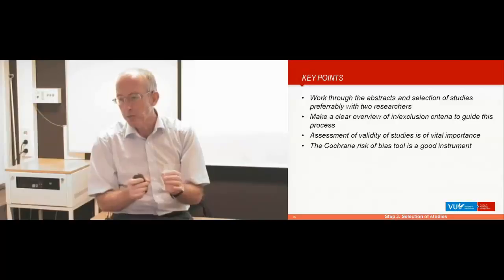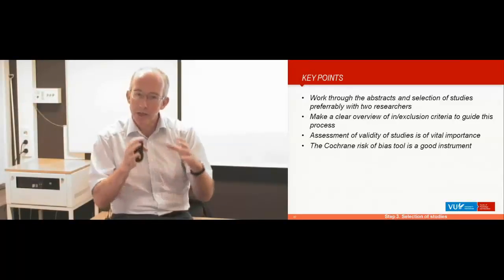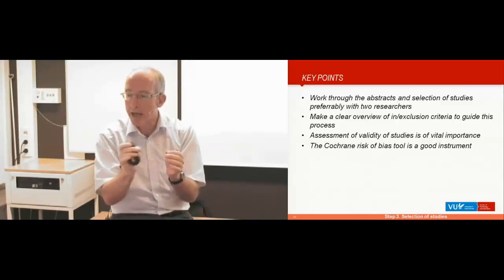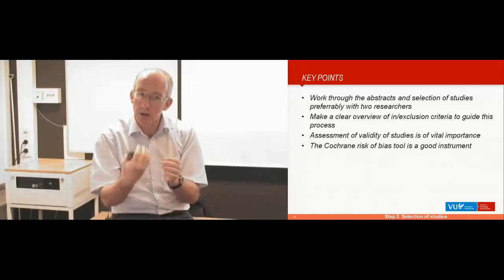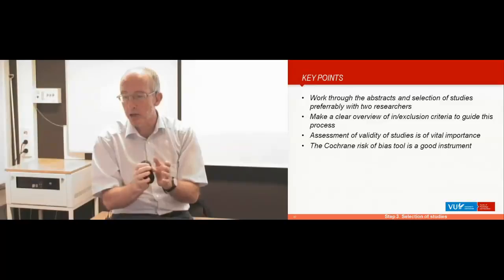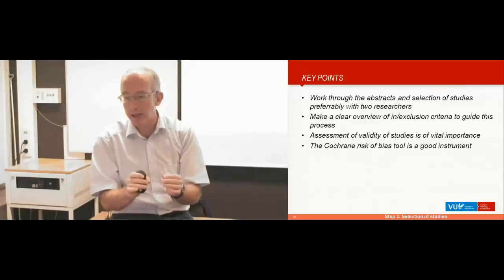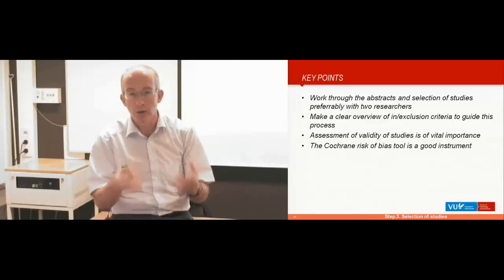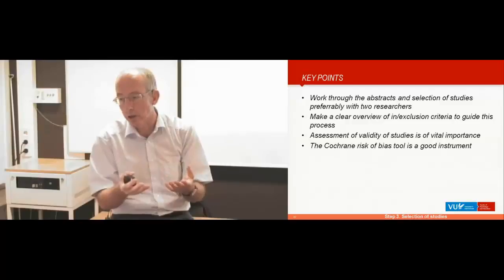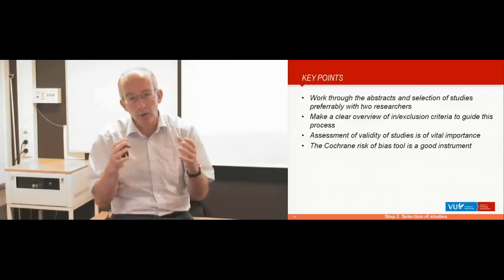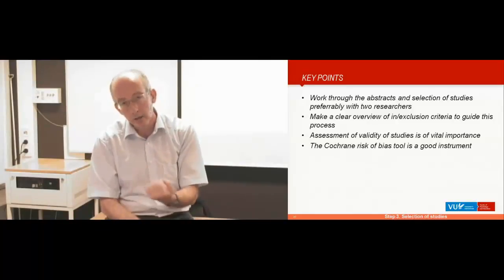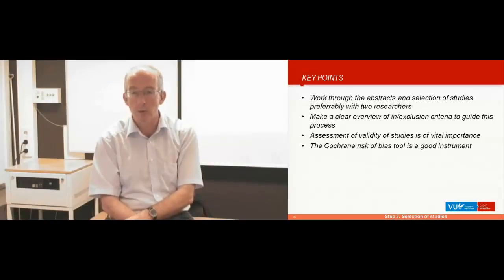The key points of this part are: after selecting studies from bibliographical databases, you have to work through the abstracts and select the studies you retrieve full text for, preferably by two researchers. You have to make a clear overview of the inclusion and exclusion criteria to guide this process. After inclusion, you have to assess the validity and risk of bias of the included studies, which is of vital importance for the value of your meta-analysis. For this, I advise you to use the Cochrane risk of bias assessment tool.